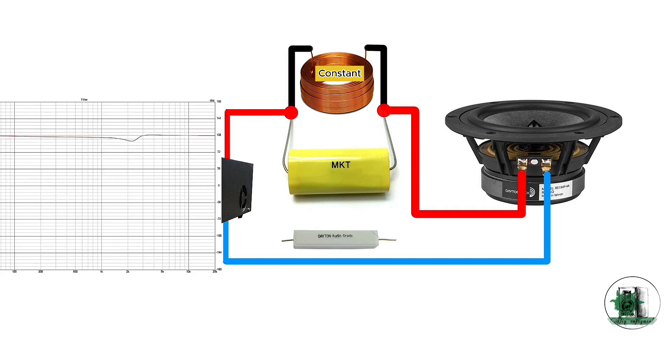So far, we can say the L value adjusts the valley depth and the filter width, and the C value determines the valley frequency.